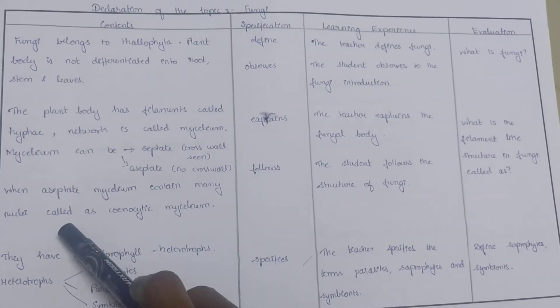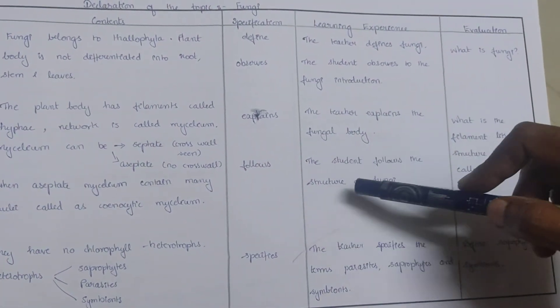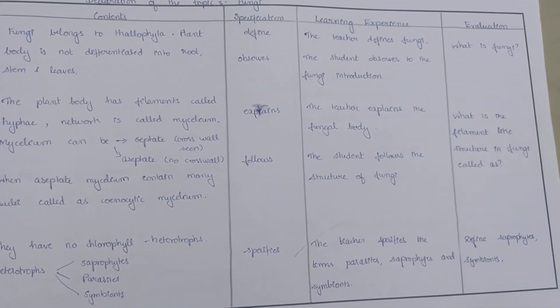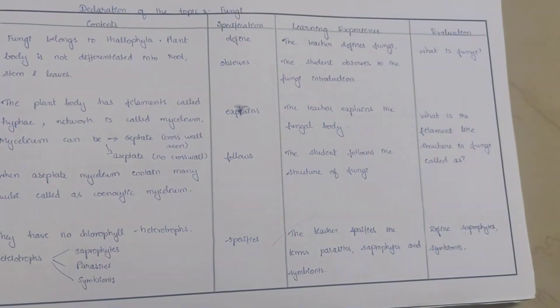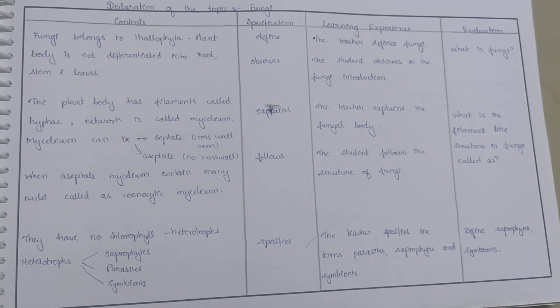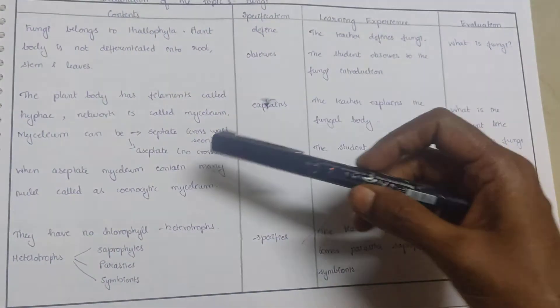The teacher explains the fungal body and the student follows the structure of fungi. What is the filament-like structure in fungi called? Next, they have no chlorophyll.